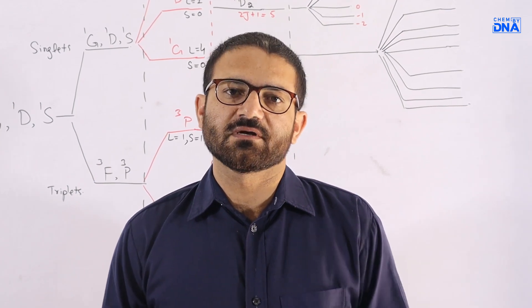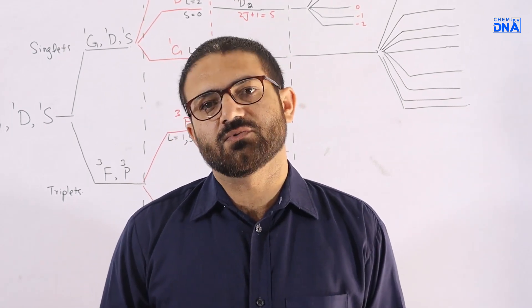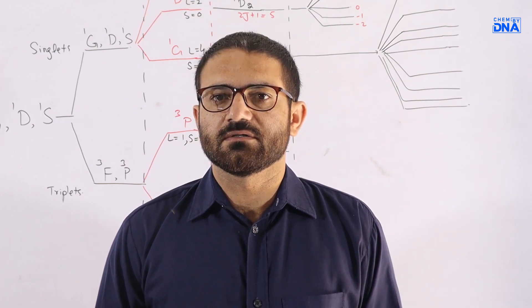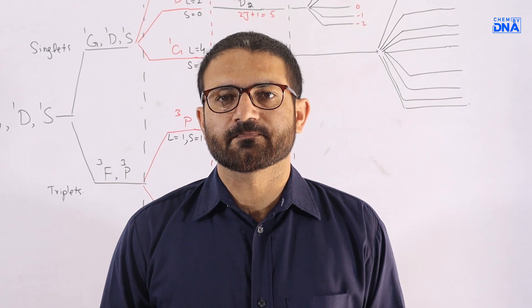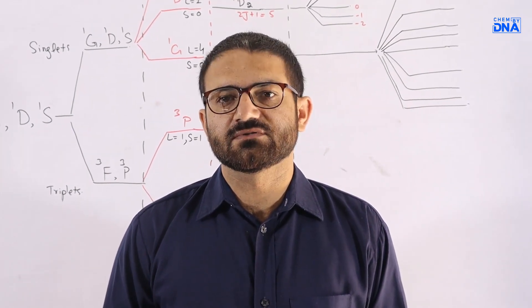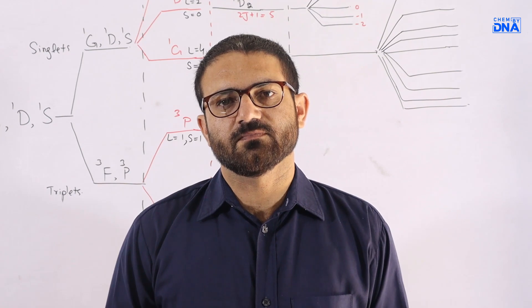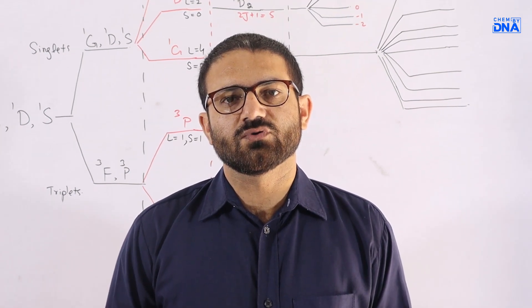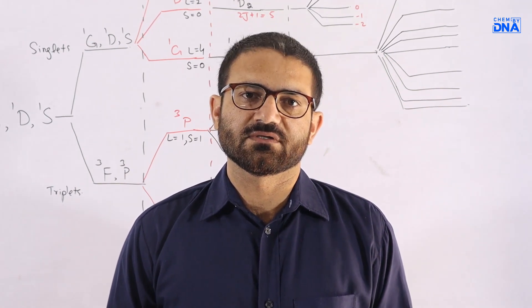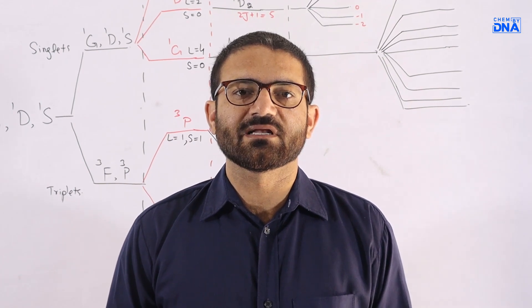Conversely, if we talk about the irregular multiplets, these are the multiplets in which spectroscopic terms having higher J values fall lower in energy. These kinds of multiplets will be observed in those cases where the electronic configuration is greater than half filled.